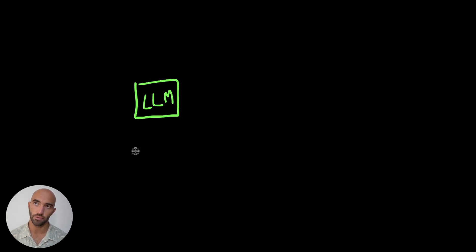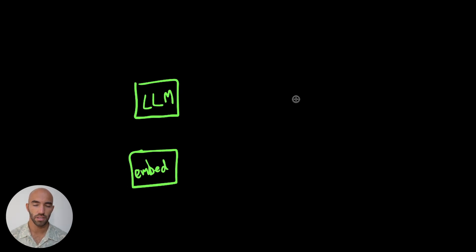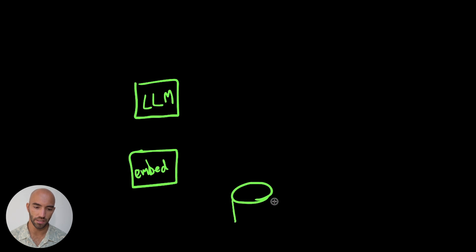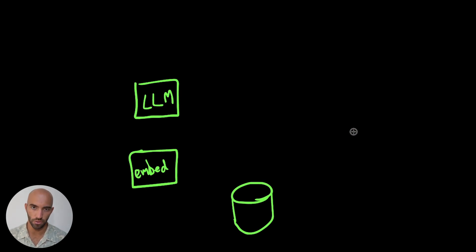We're also going to have another instance that will store our embedding model — I'll explain why in a moment. We're going to see how to set those two instances up. Then we're going to need to get a dataset. We're not going to use anything crazy big, but we will need it. What we're going to do is take our dataset, which is essentially chunks of information about AWS, and use them to inform our large language model.